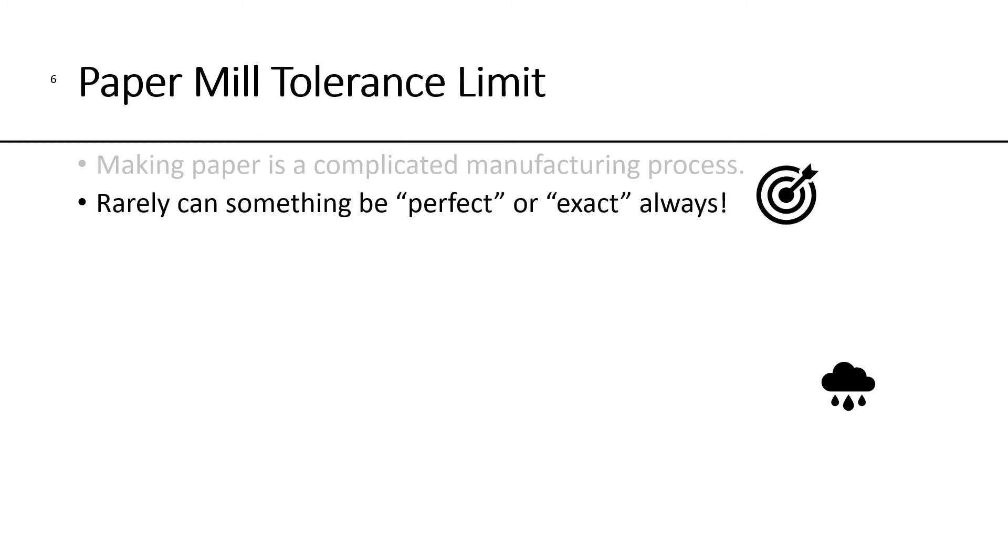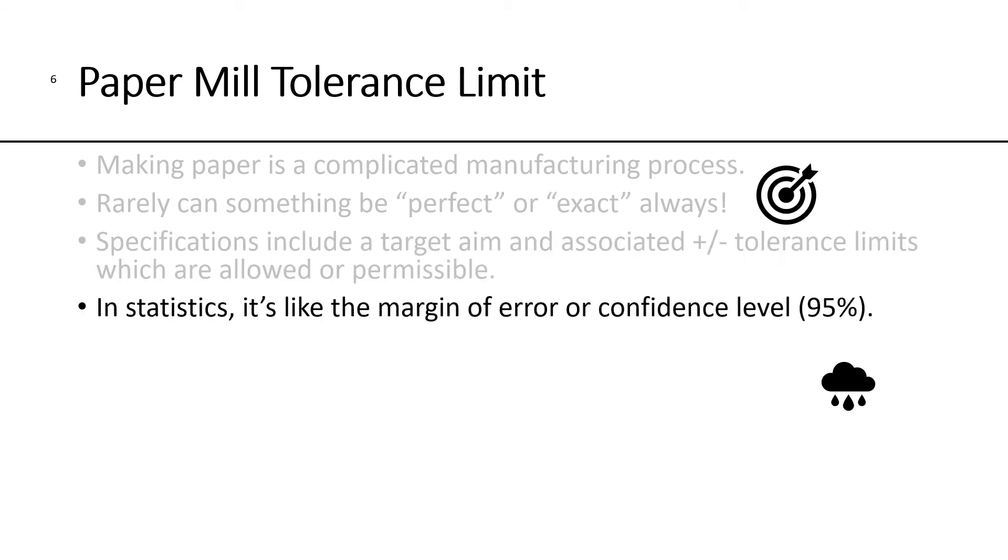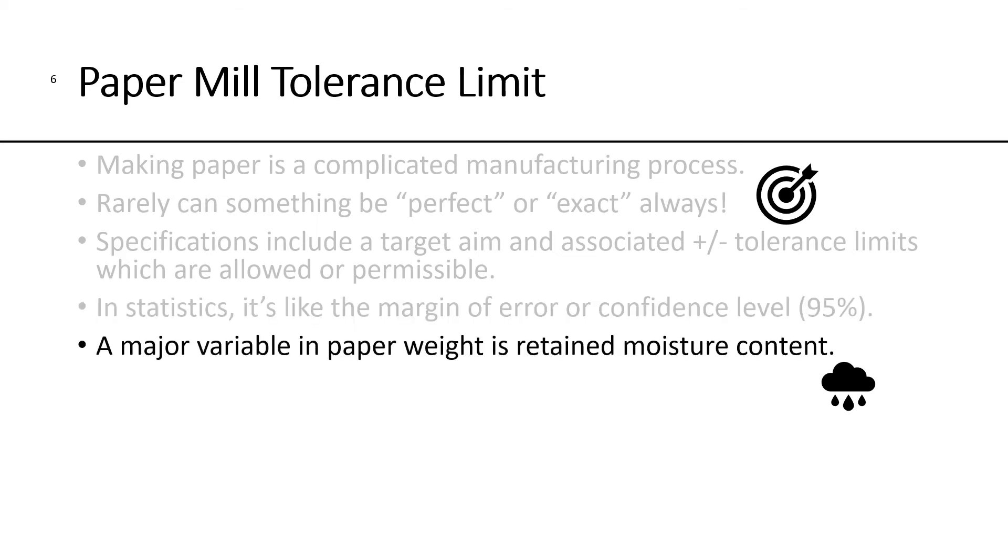The reason why that answer is close enough or good enough is because making paper is a complicated manufacturing process. You rarely can be perfect and exact all the time. What we have is manufacturing specifications that include a target aim that you're shooting for, and associated plus or minus tolerance limits, which are allowable and permissible. In statistics, think of it like a margin of error or like a confidence level.